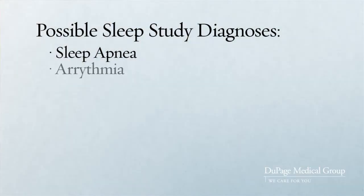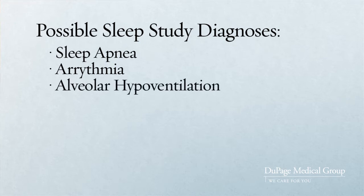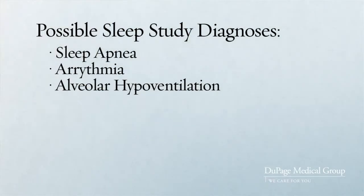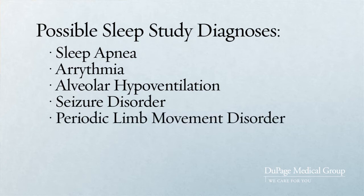We can get diagnoses of arrhythmias or cardiac rhythm abnormalities. We can also diagnose something called alveolar hypoventilation, which is basically persistently low oxygen levels that can compromise someone's cardiac health. We can get a diagnosis of seizure disorder, and we can get diagnoses of periodic limb movement disorder, which is kind of a surrogate for something called restless leg syndrome.